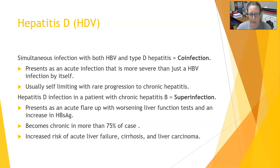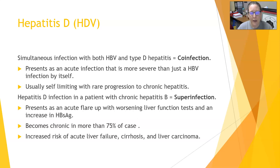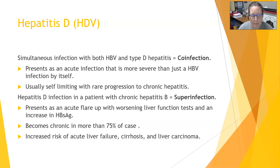With rare progression to chronic hepatitis. However, a hepatitis D infection in a patient that already has chronic hepatitis B is termed a super-infection. That infection will present as an acute flare-up of the chronic HBV with worsening liver function tests and an increase in the hepatitis B surface antigen. This type of infection will become chronic in more than 75% of cases, and patients are at increased risk of acute liver failure, cirrhosis, and liver carcinoma.